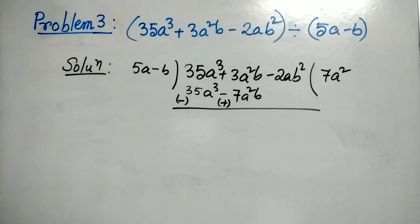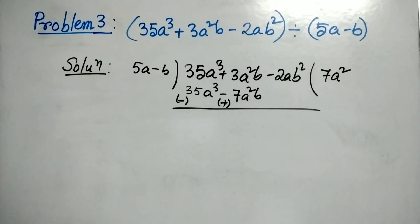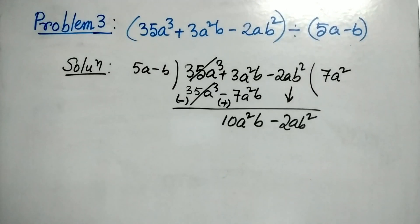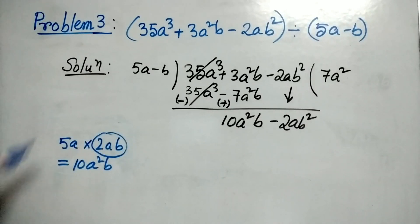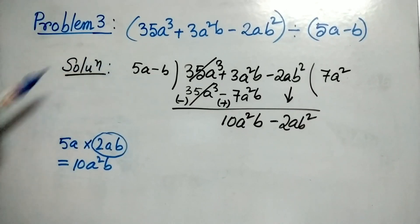We found 7a squared to multiply with 5a minus b so that we get 35a cubed, because 35a cubed is the first term in the dividend. We placed all the result just below the like terms of the dividend. After subtraction we got 10a squared b, and minus 2ab squared has come down.